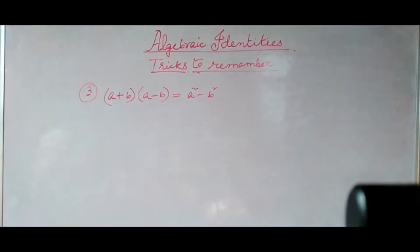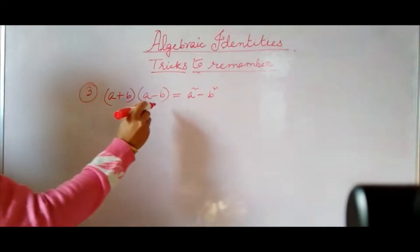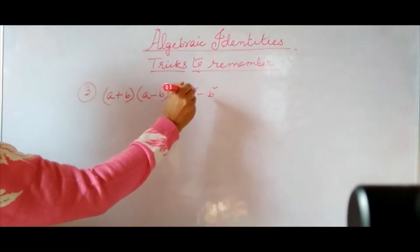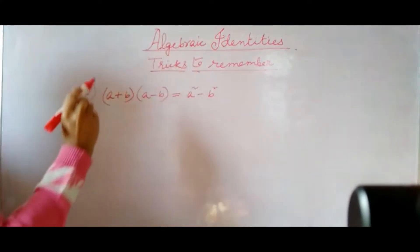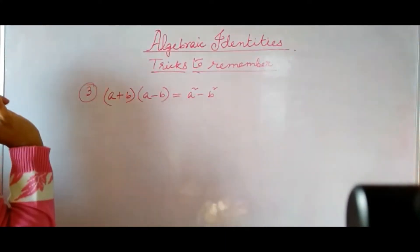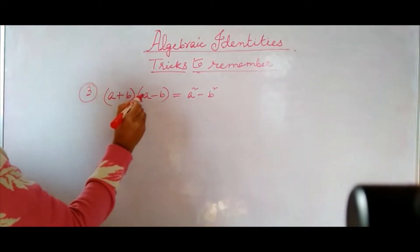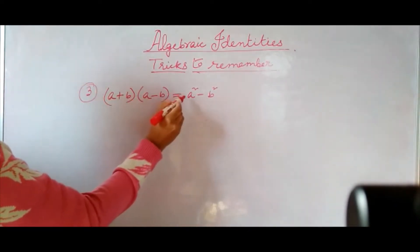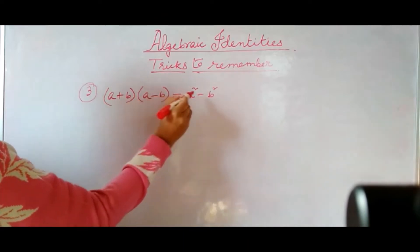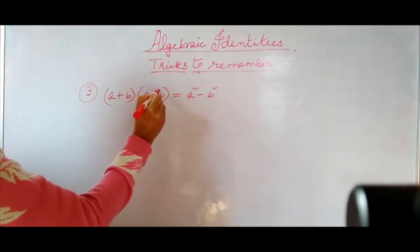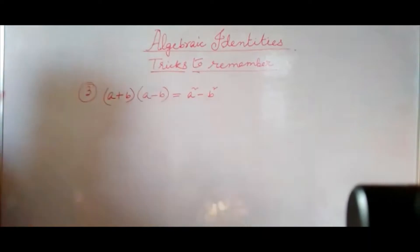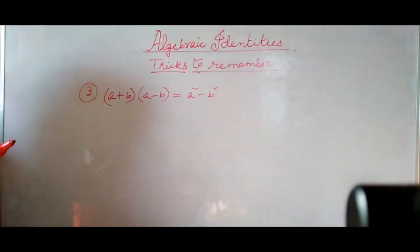Now the next identity: A plus B into A minus B is equal to A square minus B square — all of you know this. Now let me show you the technique: A into A gives A square. Then plus, minus, minus — minus — then B into B is equal to B square. Isn't it very simple?